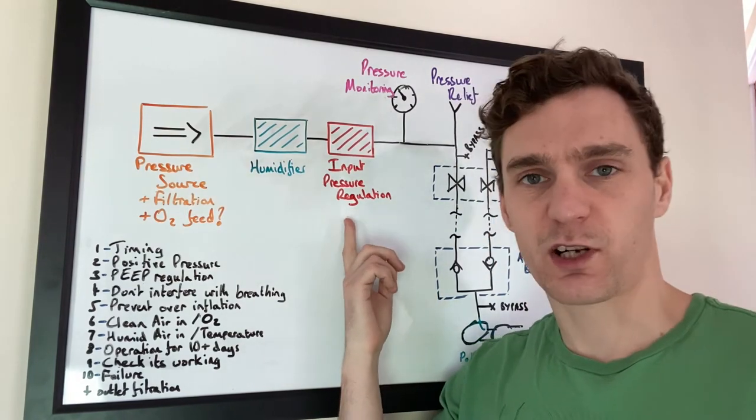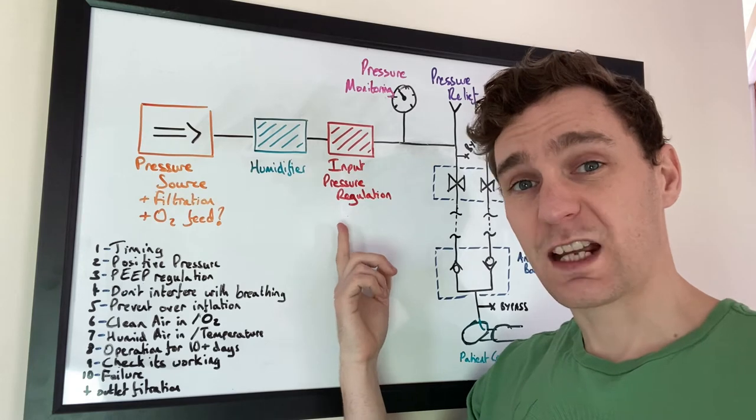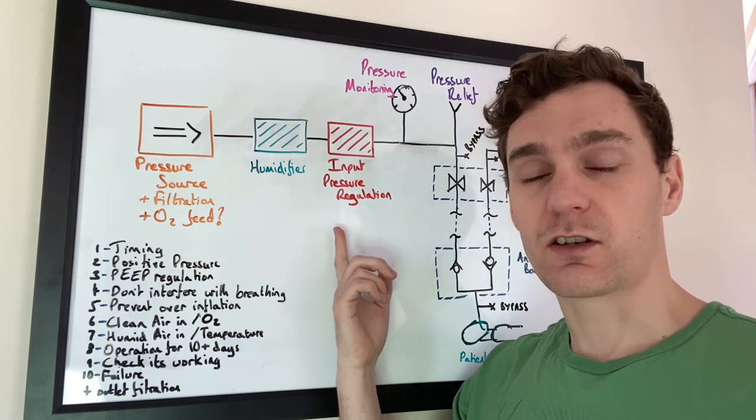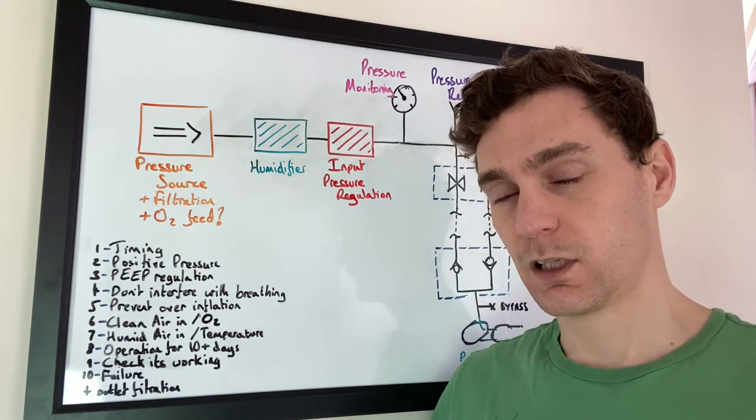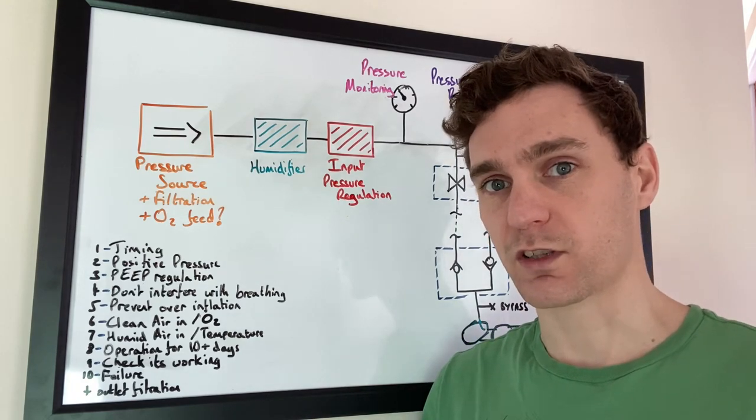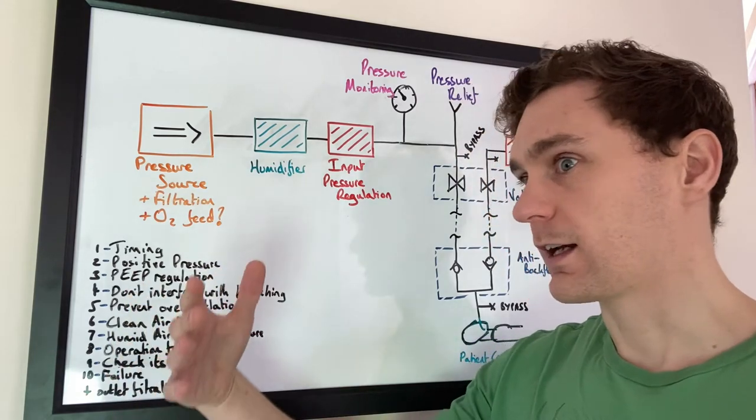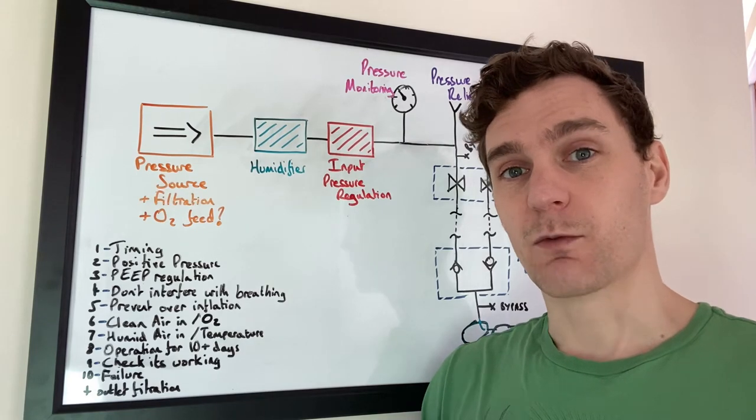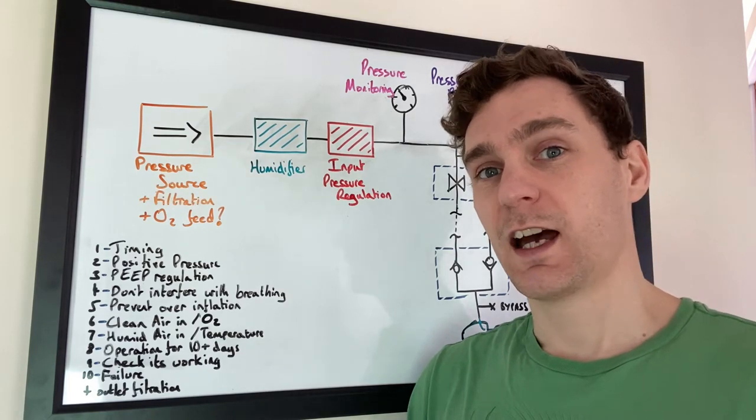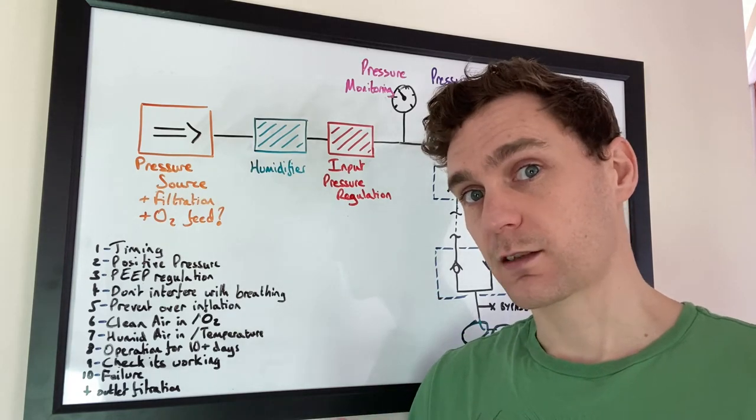Next on the list is input pressure regulation. This is important not only to be able to set it but to be able to change it over time. This is because the needs of a patient might change over time. You might start with a high pressure when you want to have a large volume of air going into their lungs. But then at a later date if their lung function begins to be impaired, you might want to have a lower pressure and a faster breathing rate. So shorter shallower breaths rather than long deep breaths.